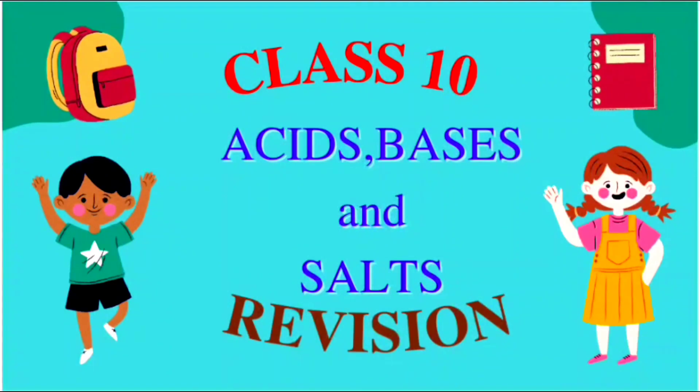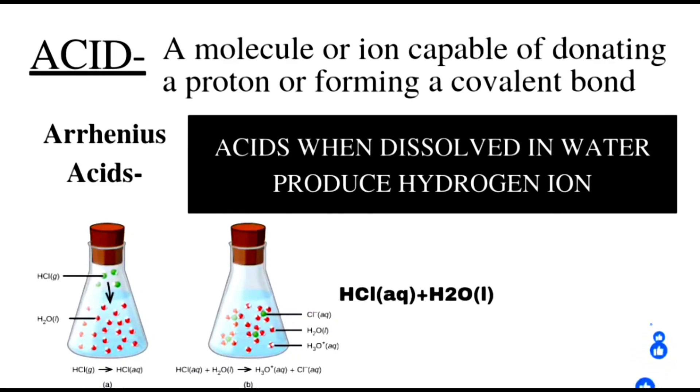First of all we will discuss about acid. What is acid? A molecule or ion capable of donating a proton or forming a covalent bond. According to Arrhenius, acids when dissolved in water produce hydrogen ion. So acids produce hydrogen ions when dissolved in water.